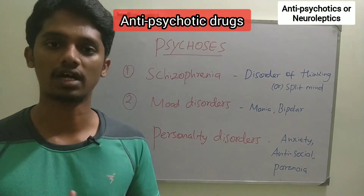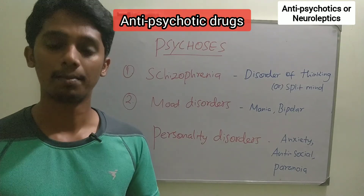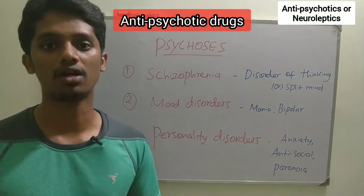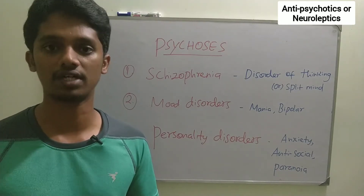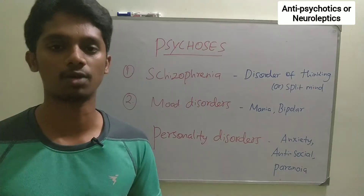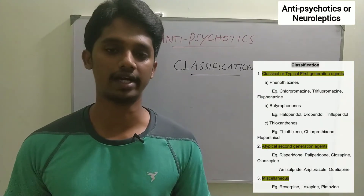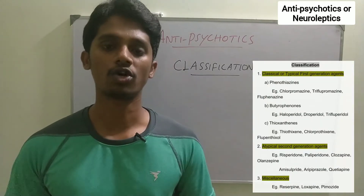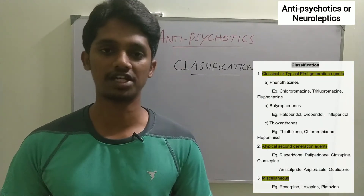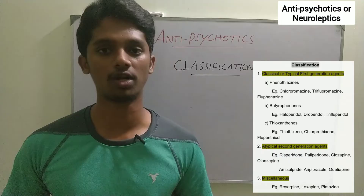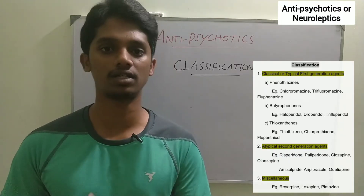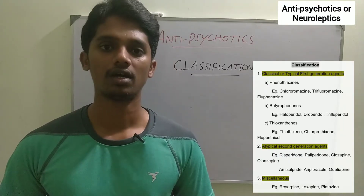Now we will talk about classification, mechanism, pharmacology, adverse effects, and final uses. For classification, there are two categories: first generation neuroleptics and second generation neuroleptics.